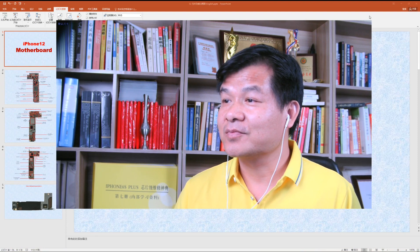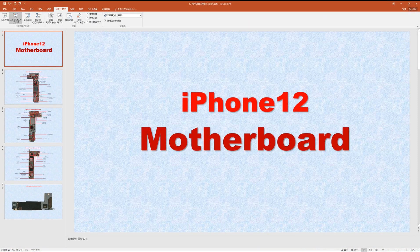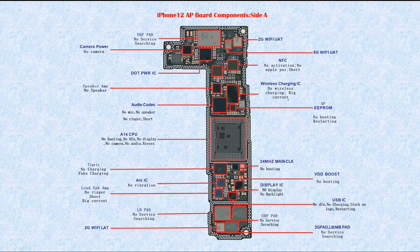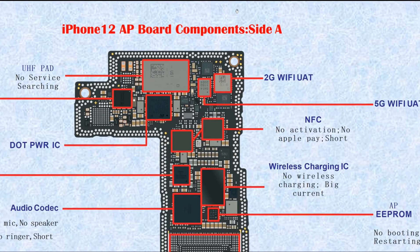Hello, I'm Frank from Fengkong Team, China. I'd like to talk about the iPhone 12 motherboard — the component functions on the iPhone 12 motherboard. The iPhone 12 has two boards: one is the AP board and the other is the BB board, the baseband board. AP board means logic board. First we'll talk about AP board side A.